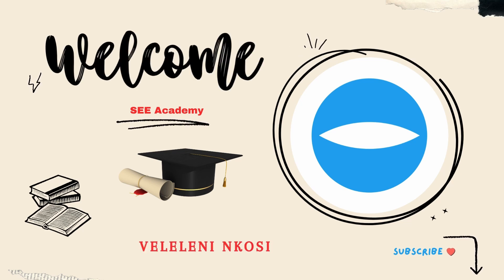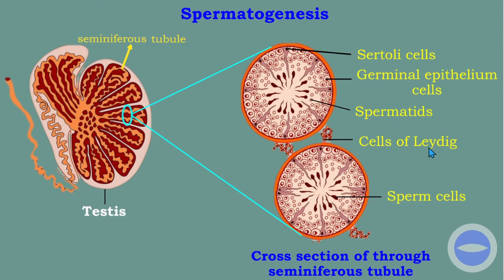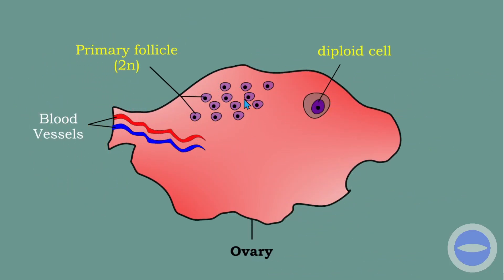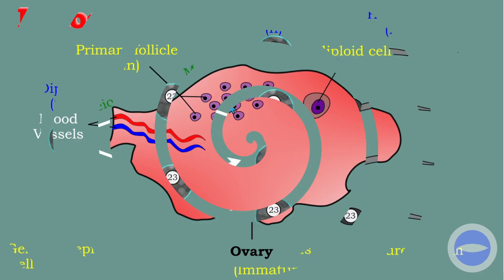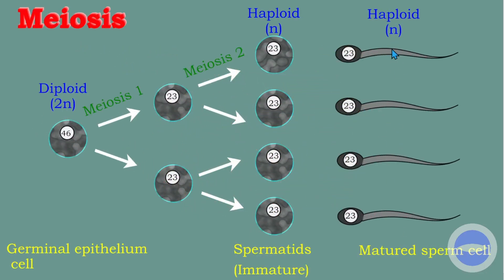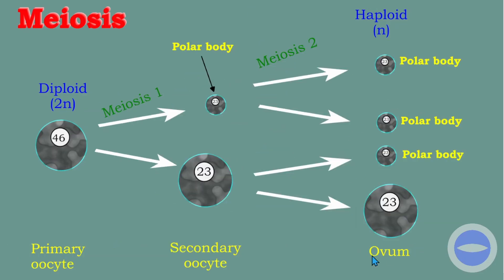Hello everyone. Welcome to C-Academy YouTube channel. My name is Velileni Ngozi. In today's lesson we discuss part 3 of human reproduction. We will be looking at gametogenesis, which is the formation of gametes by meiosis. Gametogenesis is divided into two parts: part 1 is spermatogenesis while part 2 is oogenesis. We will also show the difference between spermatogenesis and oogenesis.